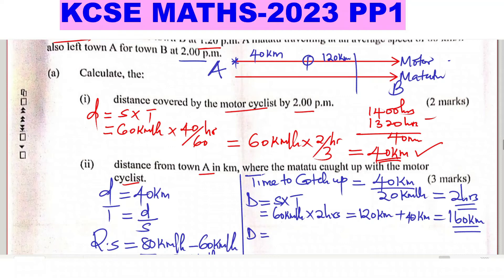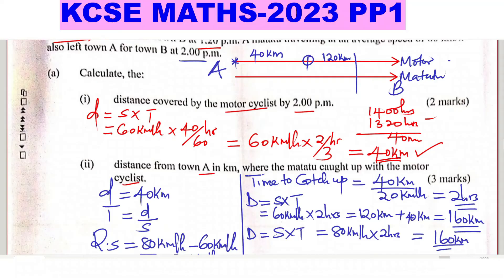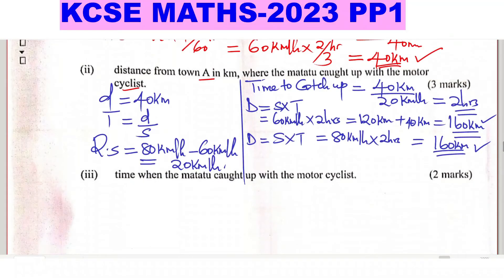Method 2: using the matatu from A directly. The matatu had not covered any distance at 2 PM, so: distance = speed × time = 80 km/h × 2 hours = 160 kilometers. The same answer — 160 kilometers is the distance from town A.